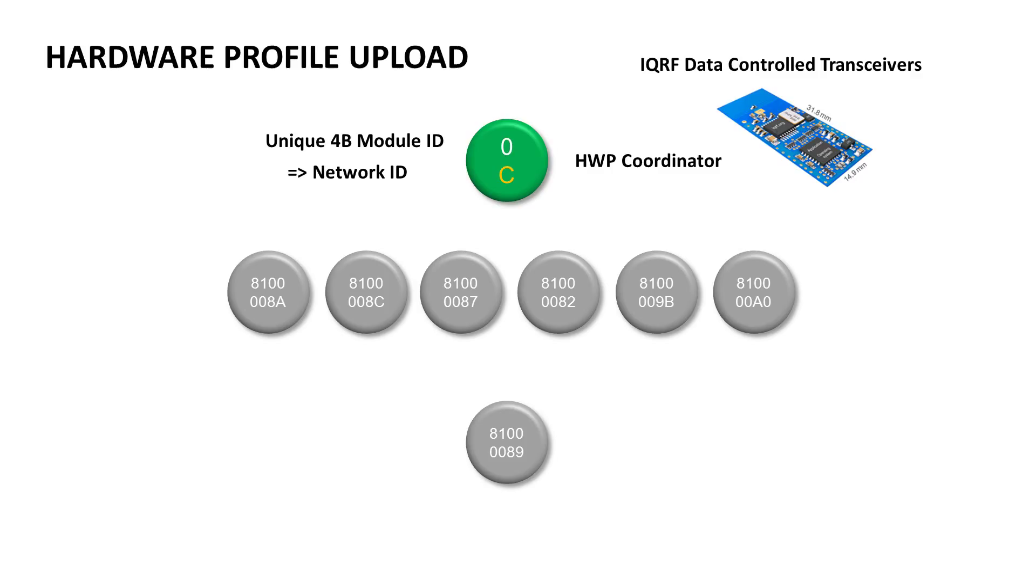The MID is then used for the network ID, so you cannot control the network with another module. You upload a node hardware profile to the modules which should operate as nodes.